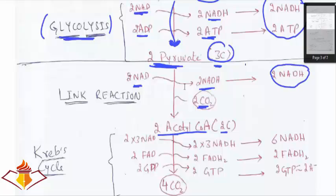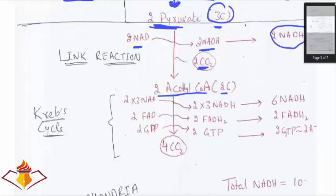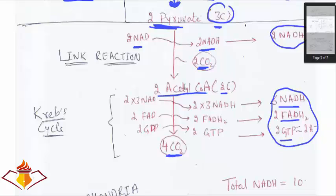This acetyl-CoA enters the Krebs cycle. From 2 acetyl-CoA we get 4 CO₂ — all the carbon is released as CO₂. The products from 2 acetyl-CoA in the Krebs cycle are 6 NADH, 2 FADH₂, and 2 GTP. So for 1 acetyl-CoA, the Krebs cycle produces 3 NADH, 1 FADH₂, and 1 GTP.